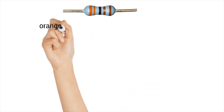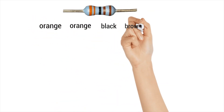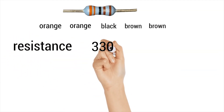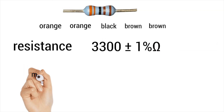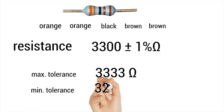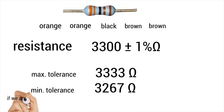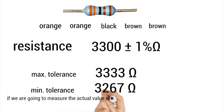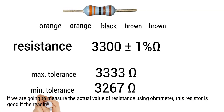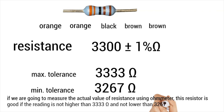We just decoded the five-band resistor with a color code of orange, orange, black, brown, and brown. Its resistance is 3,300 plus or minus 1% ohms. The maximum tolerance is 3,333 ohms and the minimum tolerance is 3,267 ohms. If we are going to measure the actual value of resistance using an ohmmeter, this resistor is good if the reading is not higher than 3,333 ohms and not lower than 3,267 ohms.